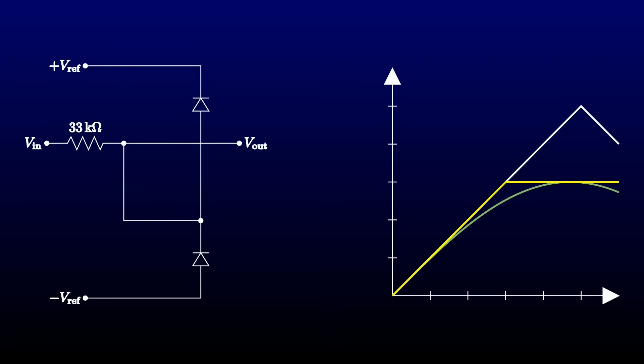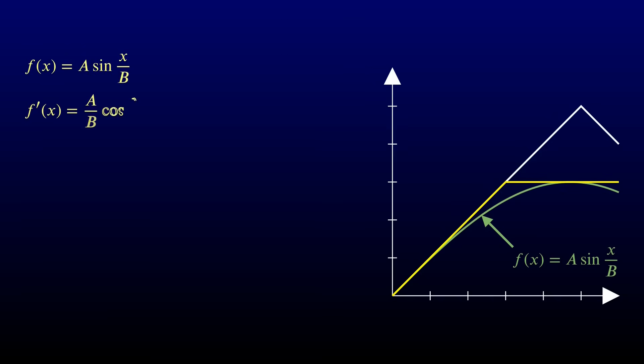Before we go on, let's quickly determine what we want input and output voltages to be. The general form for a sine wave is f of x equals a times the sine of x over b, for some constants a and b. And we know a few things that will let us determine what a and b are. First, when neither diode is conducting, the output voltage equals the input voltage. So the slope of the curve at the origin has to be 1. We'll take our function, differentiate it to give us the slope, and set the slope to 0 at the origin. That tells us that a has to be equal to b.